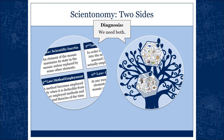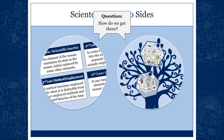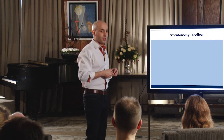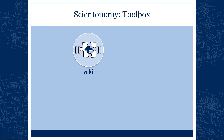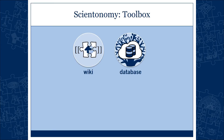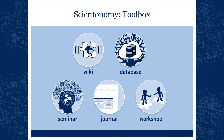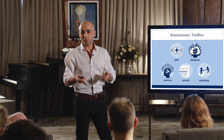The diagnosis is that we need both theoretical and observational scientonomy. The question is: how do we get there? What I'm going to give you today is a toolbox of scientonomy — the tools I believe we need to get the whole thing started. You need all of them: a wiki, a database, a seminar, a journal, and a workshop.